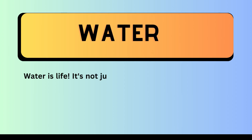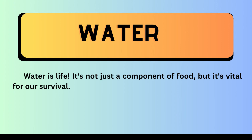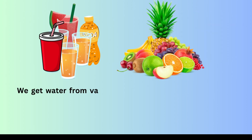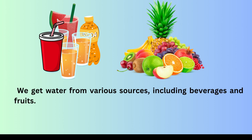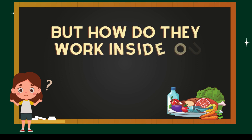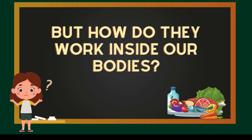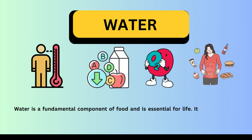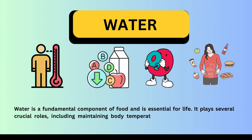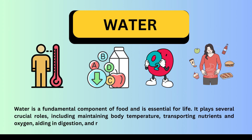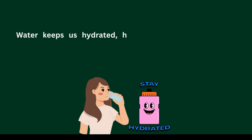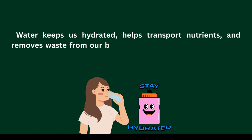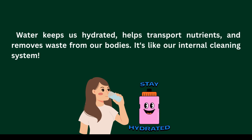Finally, let's not forget the fifth component: water. Water is life — it's not just a component of food, but it's vital for our survival. We get water from various sources, including beverages and fruits. Water is a fundamental component and is essential for life. It plays several crucial roles, including maintaining the body's temperature, transporting nutrients and oxygen, aiding in digestion, and removing waste products from the body. It's like our internal cleaning system.